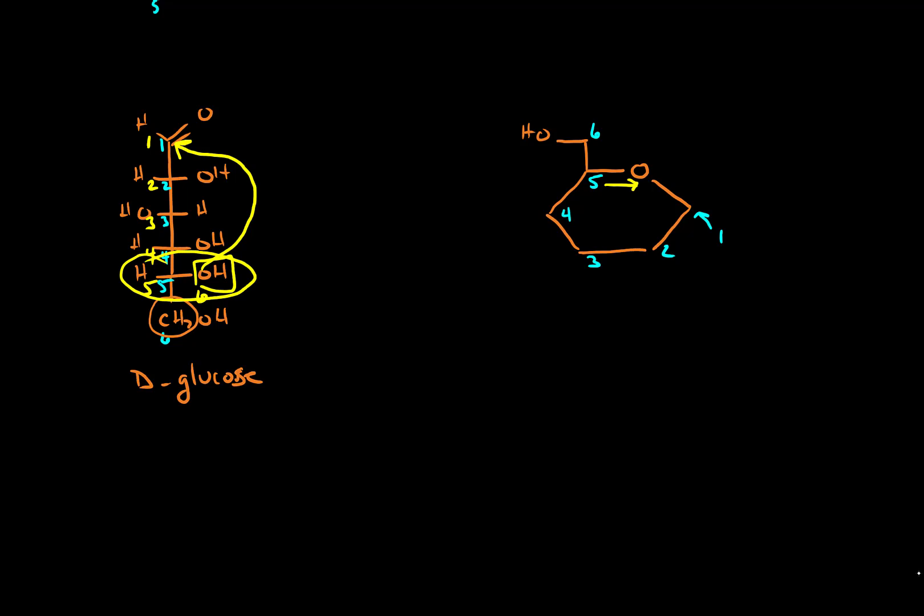And this alcohol group, this oxygen has formed a covalent bond with carbon number one, as we talked about should happen. So we're well on our way to having a good cyclic form of glucose. The last thing that we need to do is add in our alcohol groups.